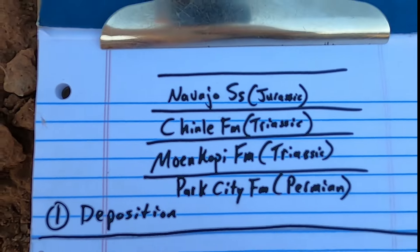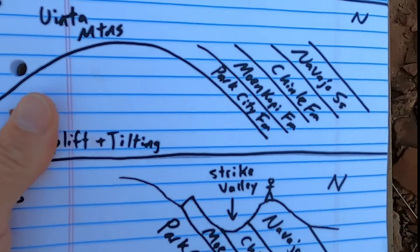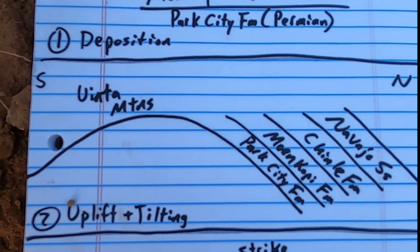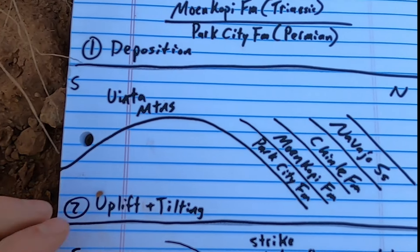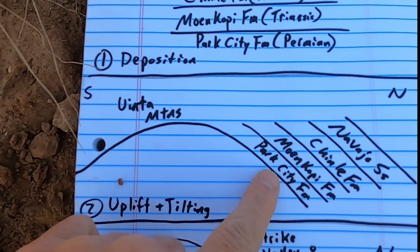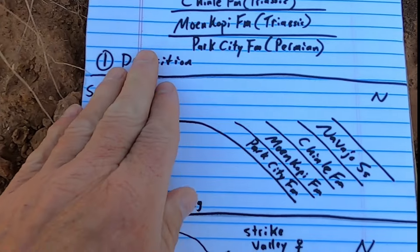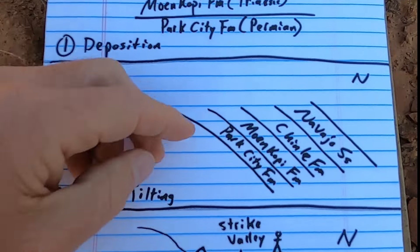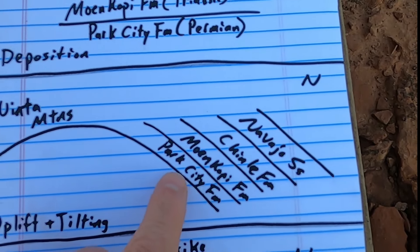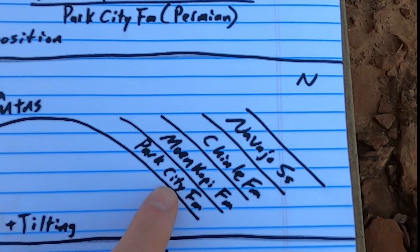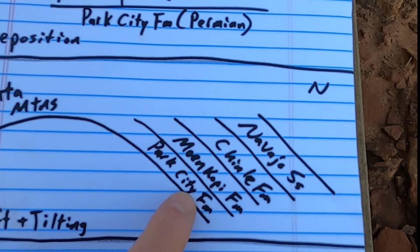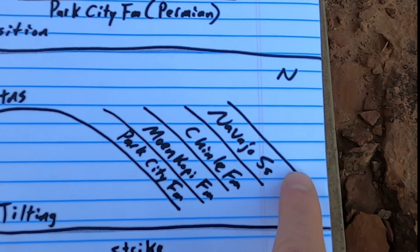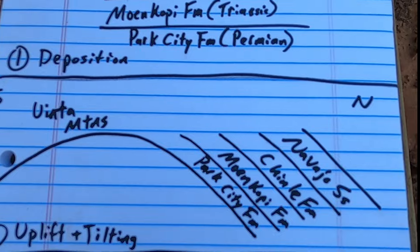The first part of our story is the deposition of these four rock layers during the Mesozoic. Then, fast-forwarding to about 70 to 40 million years ago, there was a period of uplift and mountain building called the Laramide Orogeny, which brought the Uinta Mountains up. We're on the north flank of the Uinta Mountains right now. As those mountains were raised, all the rocks sitting in this area were subsequently tilted — dipping to the north or northeast — the Park City, Moenkopi, Chinle, and Navajo Sandstone.